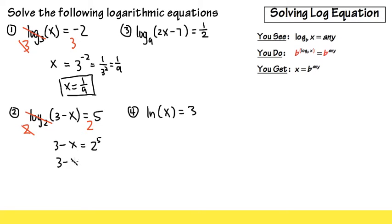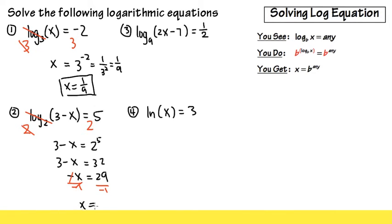So this is 3 minus x is equal to 32. Let's subtract 3 on both sides, so we get negative x is equal to 29. But that's not the answer yet — we have to divide both sides by negative 1 to get the positive x by itself. So we end up with x is equal to negative 29, and this is indeed the answer. I'm going to make a remark at the end of this video, but this is the answer.